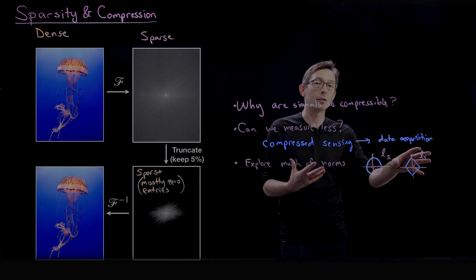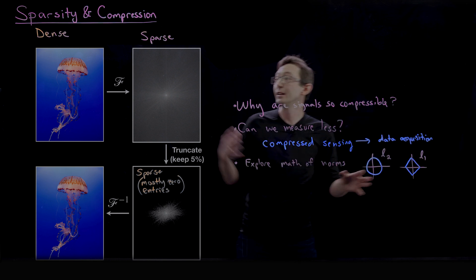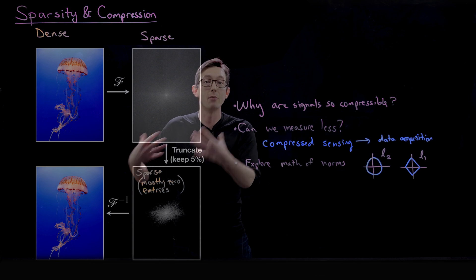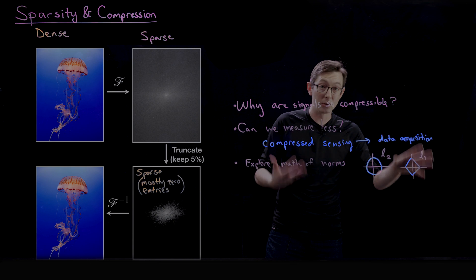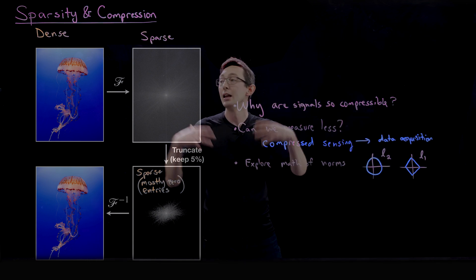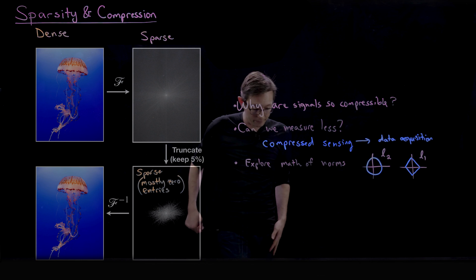So points of equal radius in the L1 norm look like diamonds versus the circles you're used to. And it turns out that this L1 norm is really important in finding solutions that are sparse and promoting sparsity. So we're going to look at the L1 norm and why it is so useful for compressed sensing and ensuring sparsity in signals.